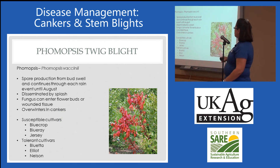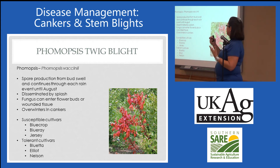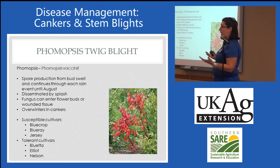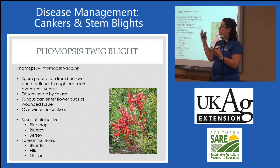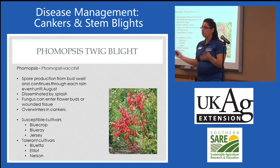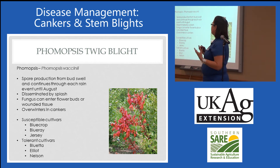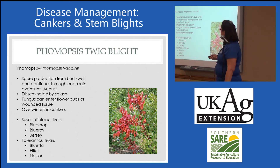Spore production will begin at bud swell — that's when infection occurs. Infection can occur through blossoms or through natural openings. This pathogen doesn't just sporulate once during the year; it sporulates every time there's a rain event. A year like this year had constant sporulation events, and unfortunately we had quite a bit of Phomopsis twig blight this year.